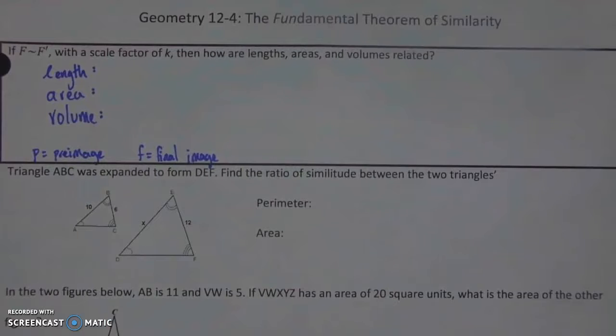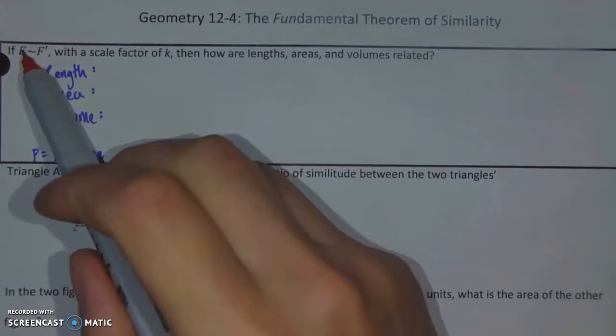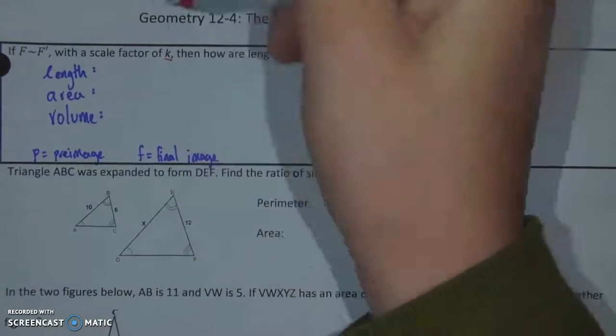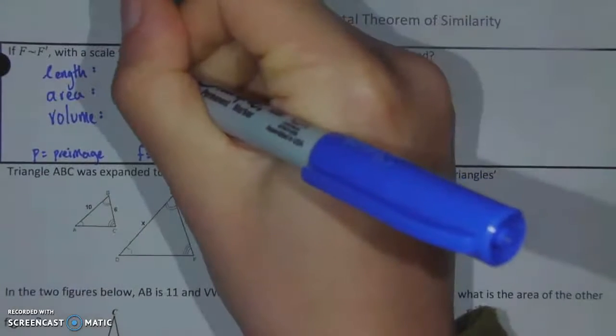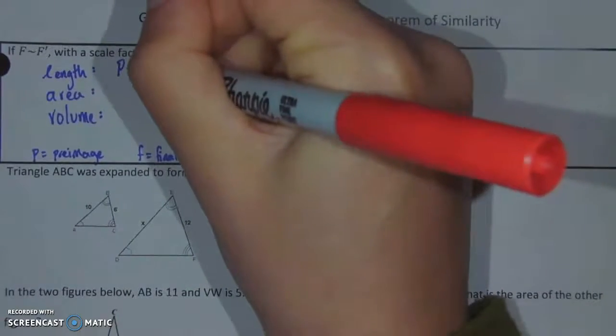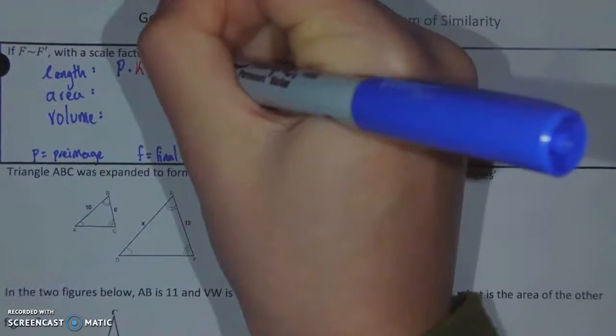Okay, so let's think about length. We actually already know how length is related. So here, if we're told that we have similar figures f and f prime, remember that little squiggle means similar, and there's a scale factor of k, so we're just going to call our size change there k. How are each of these related? Well, we know with length, what you're going to do is you're going to take the pre-image, any length in the pre-image, you're going to multiply it by just your size change k, and you're going to get, as a result, the length in the final image.